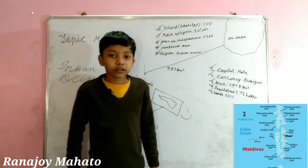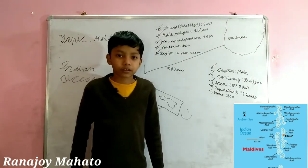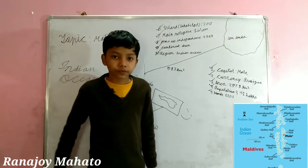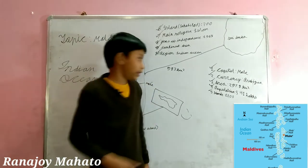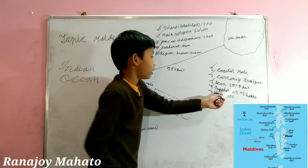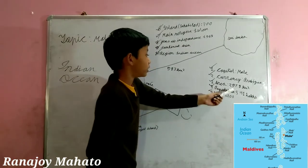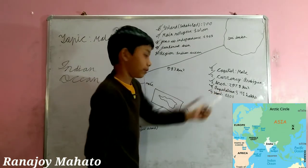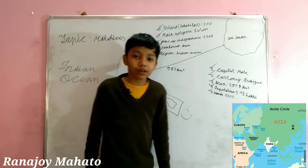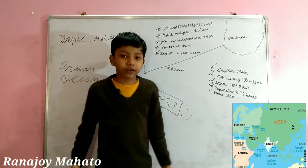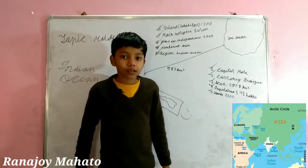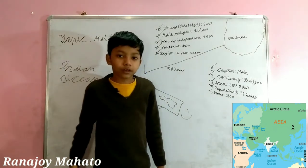The next one is area. What's the area of Maldives? Well, the area of Maldives is 297.8 square kilometers. It's very small.